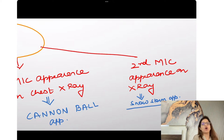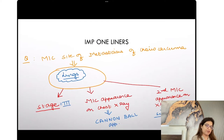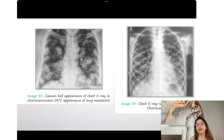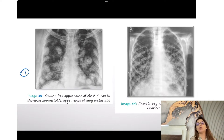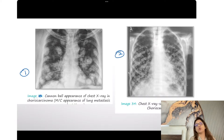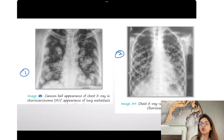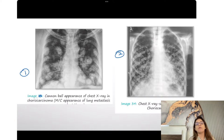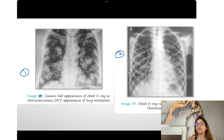Most common is cannonball appearance, second most common is snowstorm appearance. Look at these two X-rays — the first image shows cannonball appearance and the second shows snowstorm appearance. Snowstorm appearance on ultrasound means molar pregnancy or complete mole. Snowstorm appearance on chest X-ray means GTN has metastasized to the lungs.